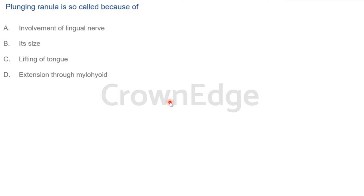To recap: in plunging ranula, mucus extravasation fluid passes through the mylohyoid muscle and enters the submandibular region. Another frequently asked question: does plunging ranula cross the midline? It is seen on one side of the floor of the mouth — it never crosses the midline. The differential diagnosis is sublingual dermoid. Plunging ranula is painless.